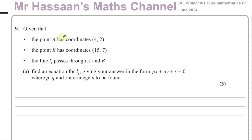Here we're told: given that the point A has coordinates (4, 2) and the point B has coordinates (15, 7), and that the line L1 passes through the points A and B, find an equation for line L1, giving your answer in the form Px + Qy + R = 0, where P, Q, and R are integers to be found.